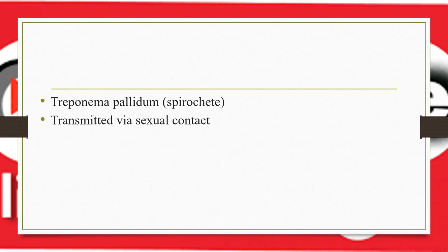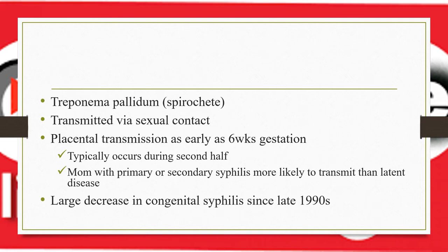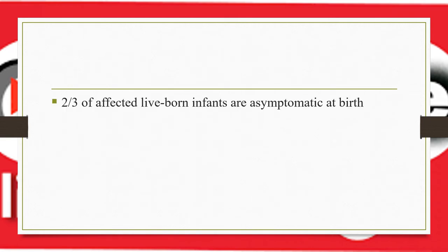Congenital syphilis is caused by Treponema pallidum, transmitted via sexual contact and from mother to newborn. Placental transmission can occur as early as six weeks of pregnancy but typically during the second half. Mothers with primary or secondary syphilis are more likely to transmit than those with latent disease. Globally, two-thirds of affected live-born infants are asymptomatic at birth.